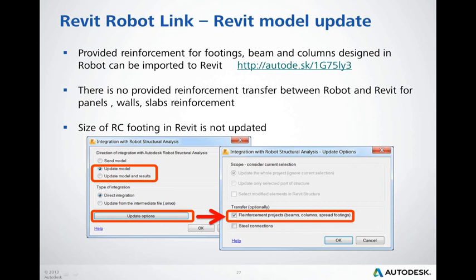The Revit model can also be updated with design results from Robot — ribals for RC columns, beams, and RC footings elements. An example video is available under the link on this slide. Note that panel, wall, and slab reinforcement calculated in Robot is not transferred to Revit. Also, the size of concrete RC footings in Revit is not updated after importing RC footing designs from Robot.